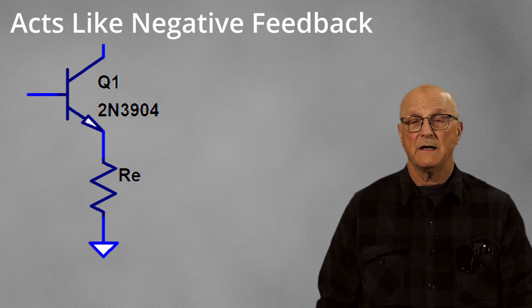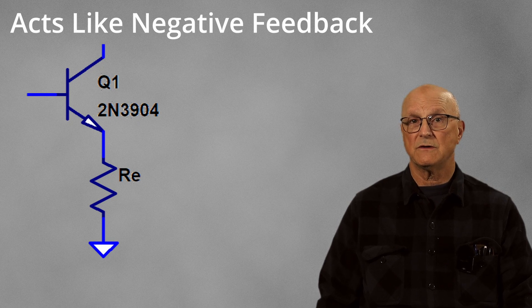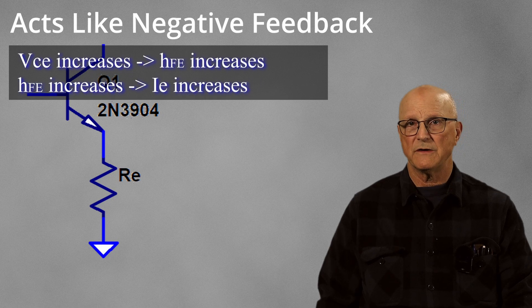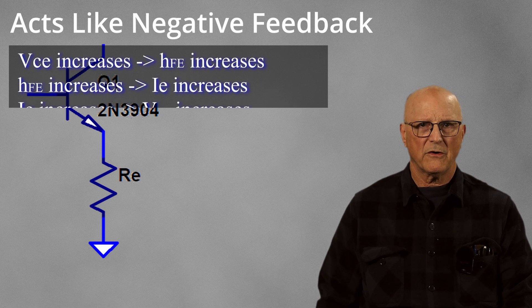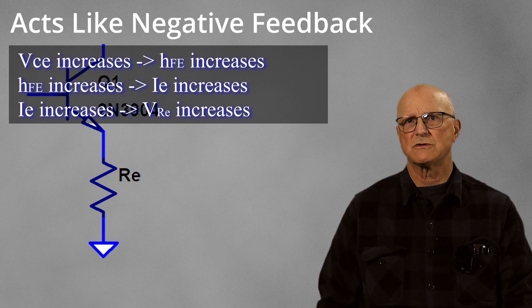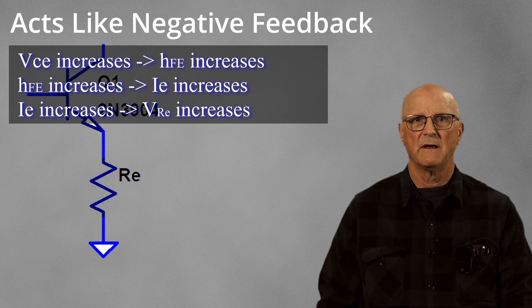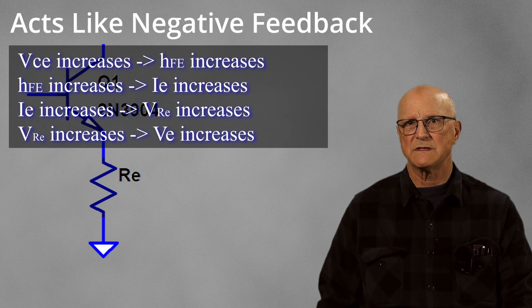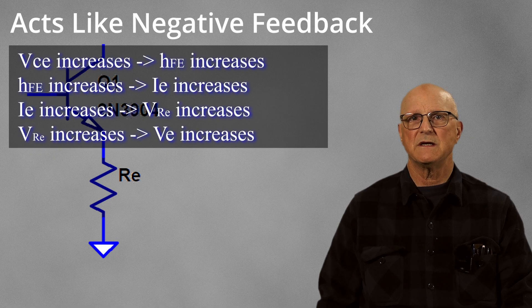When the current gain increases due to the increase in the collector emitter voltage, the emitter current also increases. When the emitter current increases, the voltage drop across the emitter resistor also increases. When the voltage drop across the emitter resistor increases, this increases the emitter voltage.